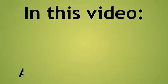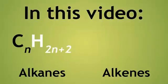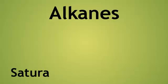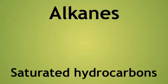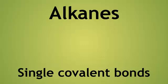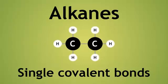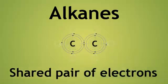This video is about the homologous series of the alkanes and alkenes and their structure. Alkanes are saturated hydrocarbons, meaning they contain only single covalent bonds between carbon atoms. A single covalent bond is a shared pair of electrons.